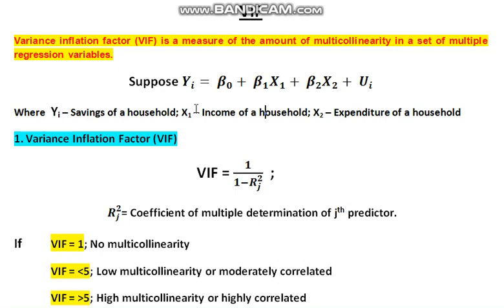So if VIF is equal to 1 divided by 1 minus Rj square, where Rj square is nothing but the coefficient of multiple determination of the jth predictor.